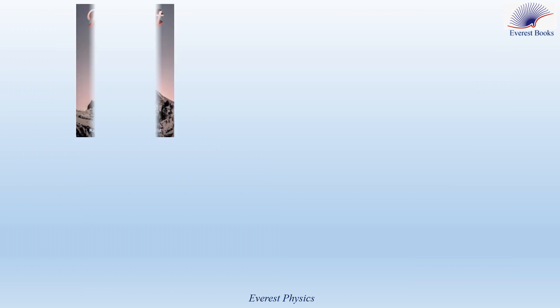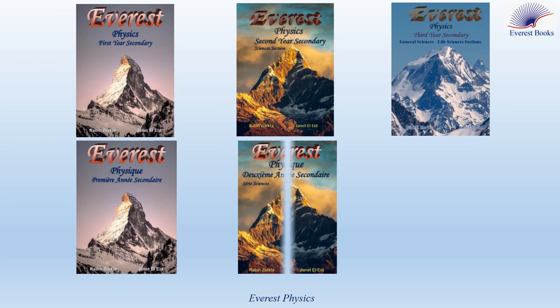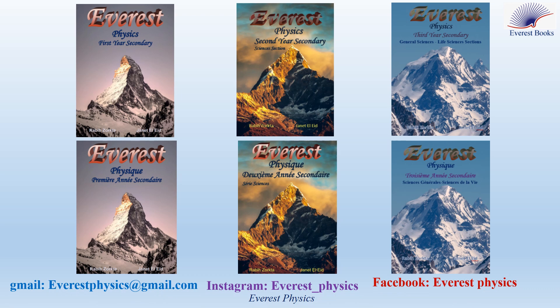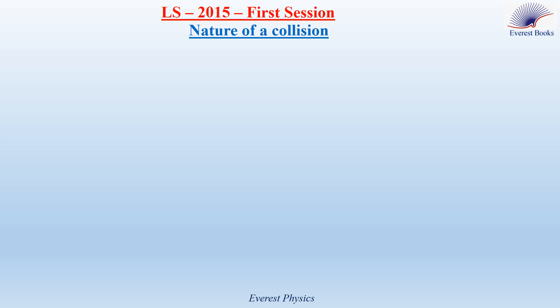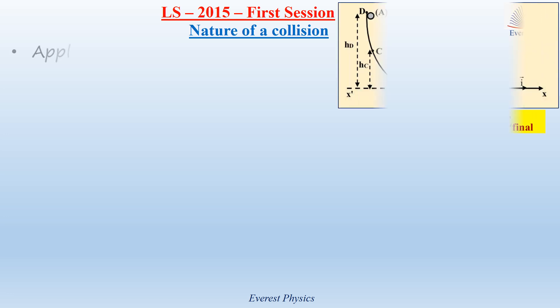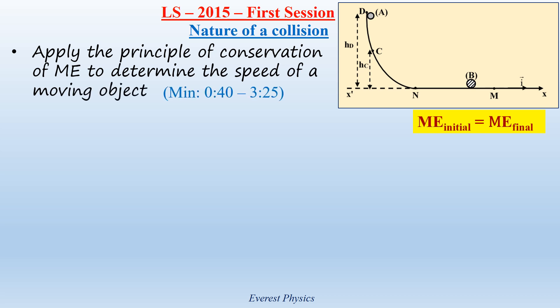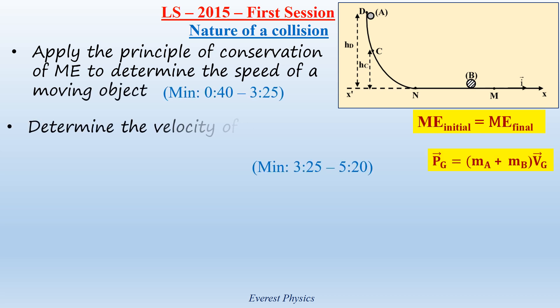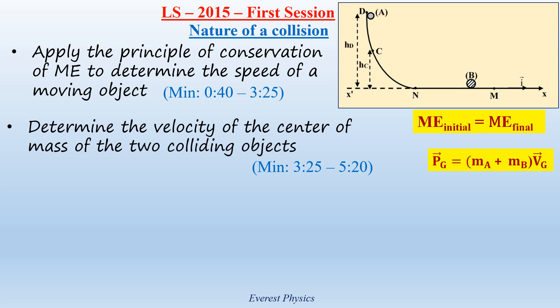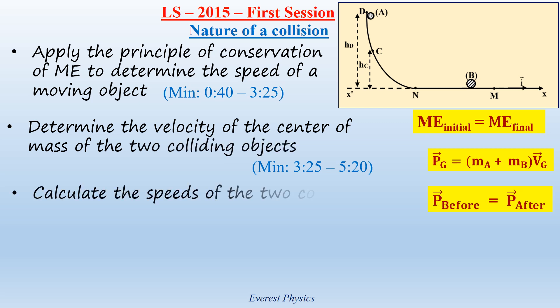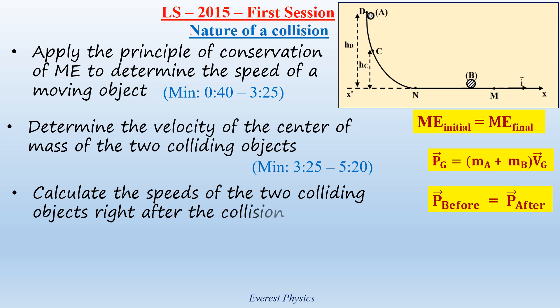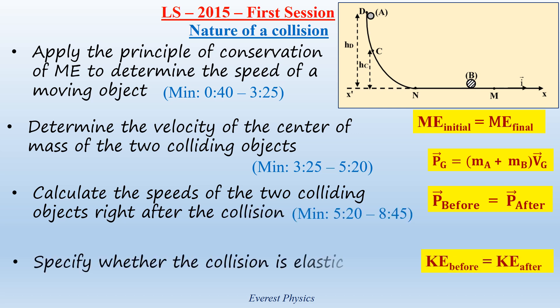Hello, this is Jeanette Androvia. Welcome to Everest Physics Academy. Before we start, we'd like to recommend our Everest Physics books for high school, where you can find more explanations and solve applications and problems. In this solved exercise, we are going to apply the principle of conservation of mechanical energy to determine the speed of a moving object, determine the velocity of the center of mass of two colliding objects, calculate the speeds of two colliding objects right after the collision, and specify whether the collision is elastic.